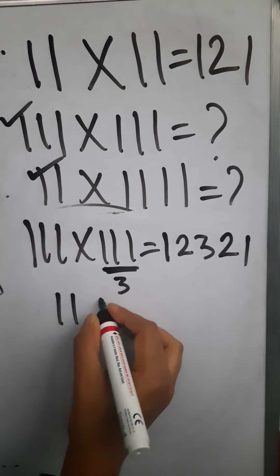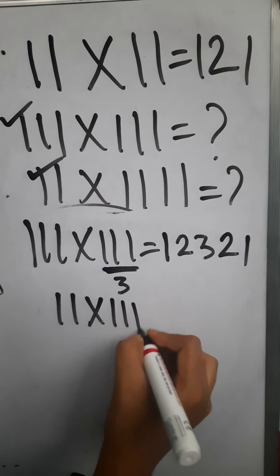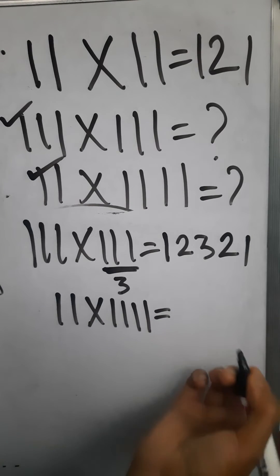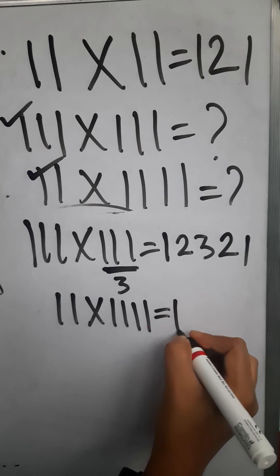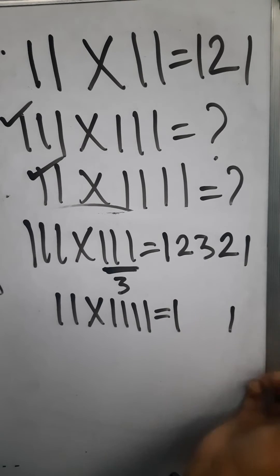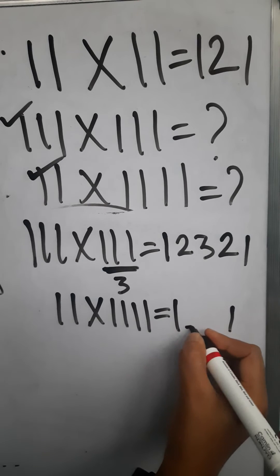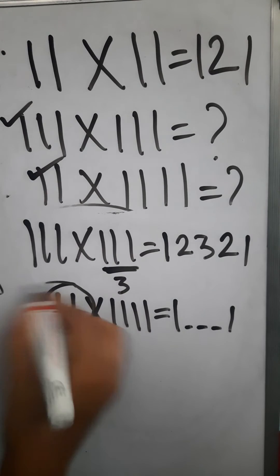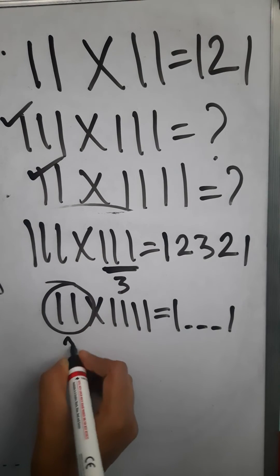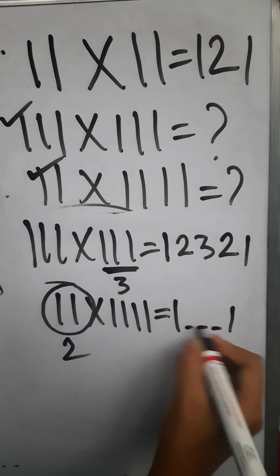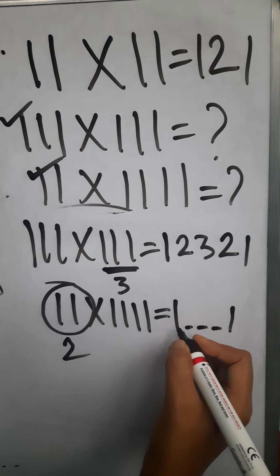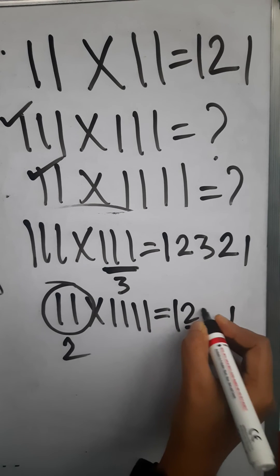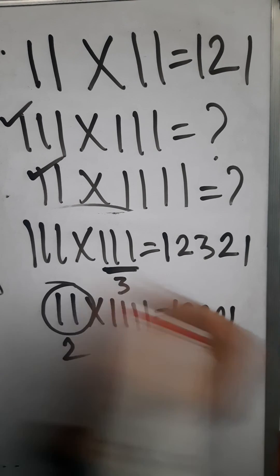In the case of unequal number of digits in each number, the total number of digits is still 6, so the multiplicative result should be 5 digits, starting and ending with 1. The minimum number of digits is 2, so in between the two 1s it will increase up to 2 and then decrease, giving the result 1 2 2 2 1.